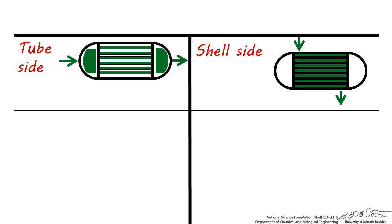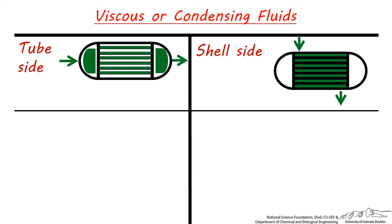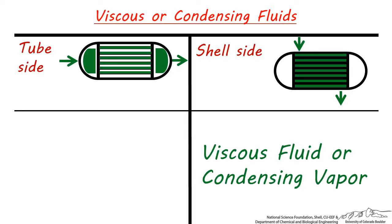In case neither stream is corrosive, fouling, or under extreme pressure conditions, check to see if either one is viscous or condensing. Fluids that need to condense from vapor to liquid, or viscous fluids, are good candidates for the shell-side. If you have a stream which fulfills either of these criteria, consider designating it as shell-side and the other fluid as tube-side.